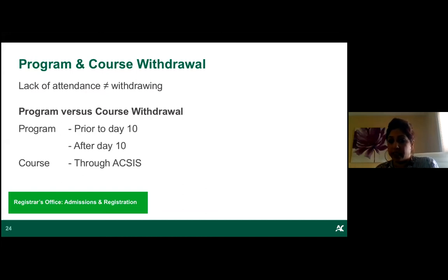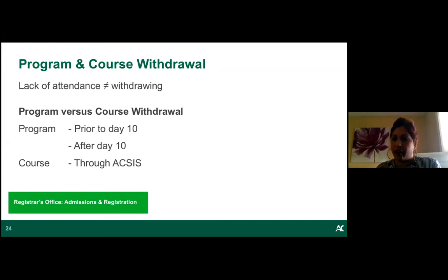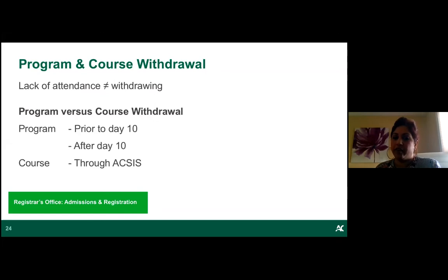To withdraw from an individual course without academic penalty, the last day is November 13th. If you drop the course through Access, you won't receive an F on your transcript. If you can't use that feature, contact your program coordinator or student success specialist and they'll help process the withdrawal. Please refer to each course individually for specific soft withdrawal, hard withdrawal, and academic penalty dates shown on your schedule.